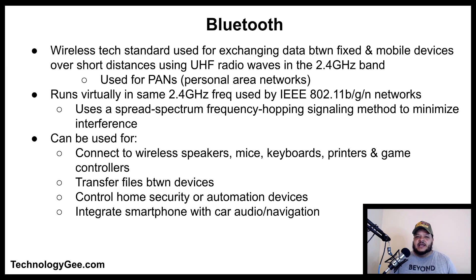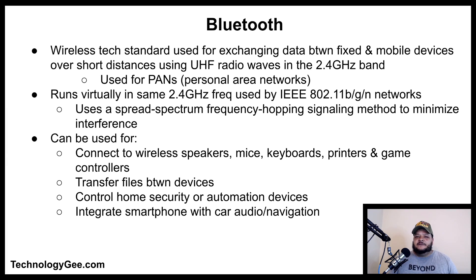Bluetooth is a wireless technology standard used for exchanging data between fixed and mobile devices over short distances using ultra-high-frequency radio waves in the 2.4 GHz band. It is used for building personal area networks. Bluetooth runs in virtually the same 2.4 GHz frequency as 802.11b/g/n networks but uses a spread-spectrum frequency hopping signaling method to help minimize interference.